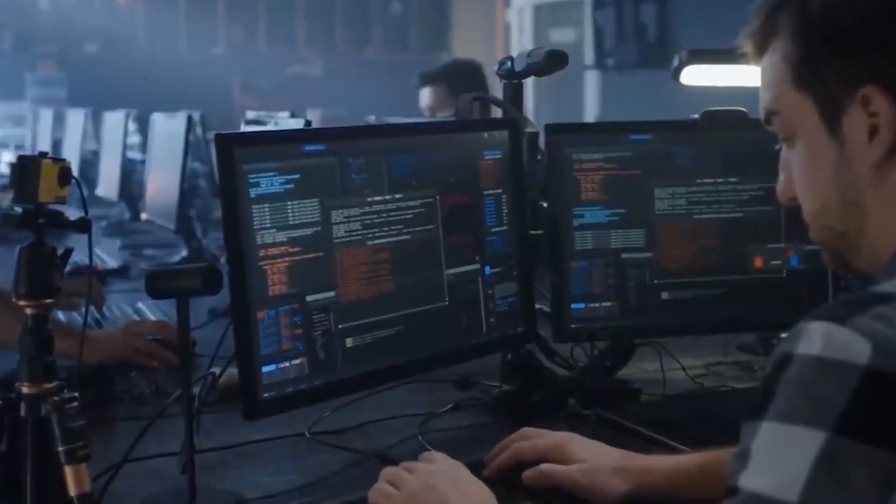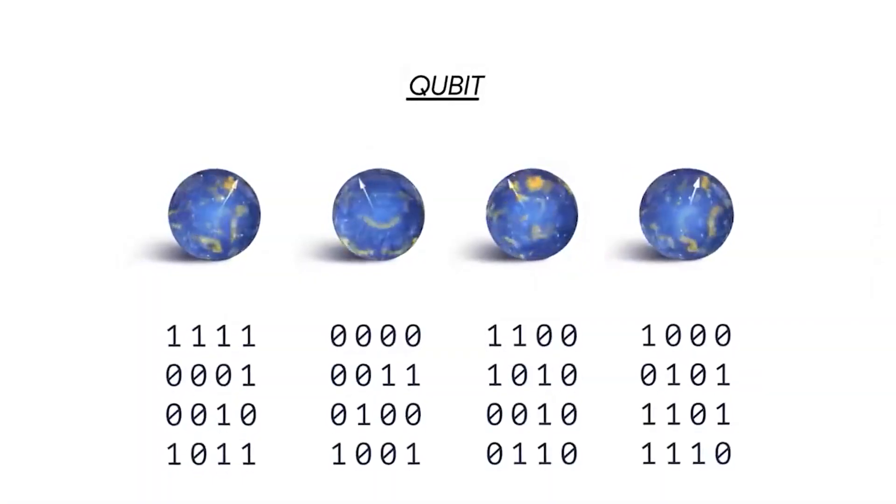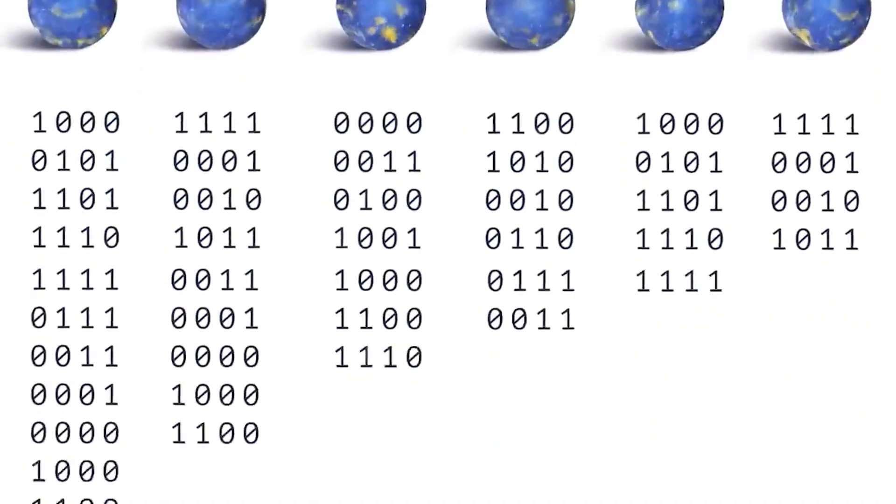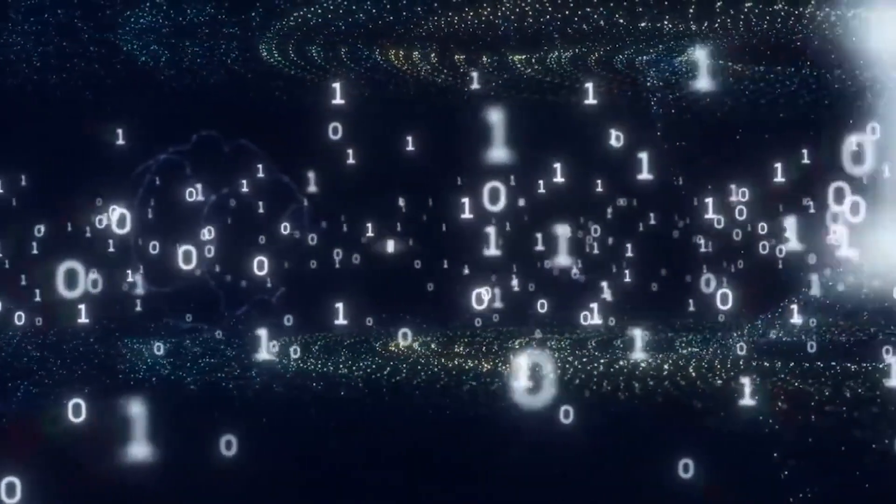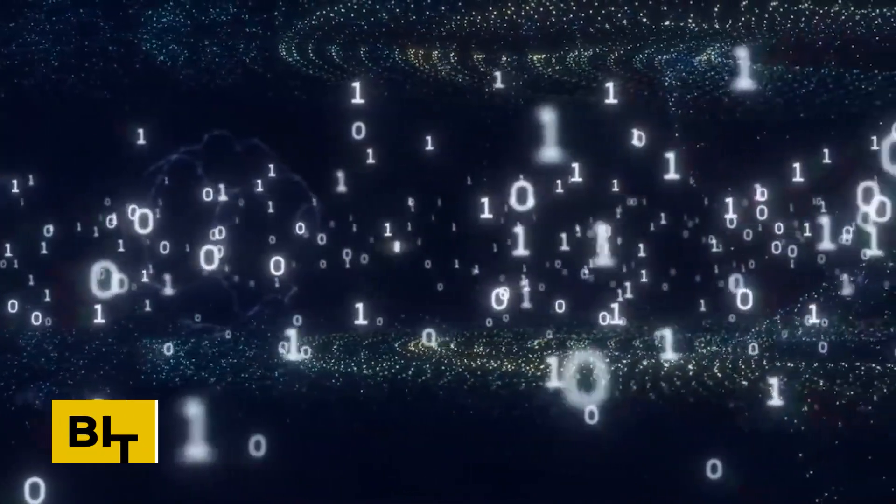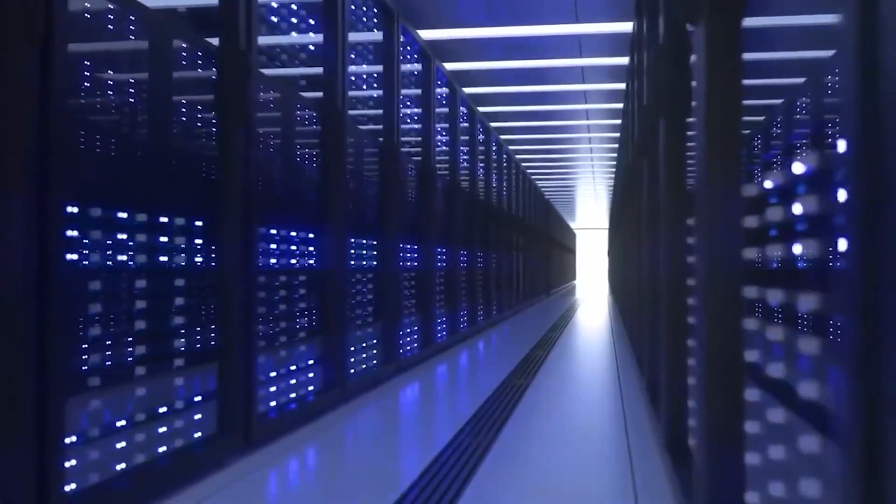A regular computer stores information as a series of ones and zeros. Whether it's a text, number, or image, it'll still be represented by ones and zeros. Each unit of this series is called a bit. But quantum computers don't store data in bits.